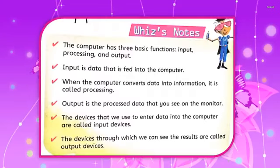In this slide I explain the notes. The computer has 3 basic functions: Input, Processing and Output. Input is data that is fed into the computer. Through input we can feed and enter our data into the computer. When the computer converts data into information, it is called processing. The computer converts the given data into information — that is called processing.